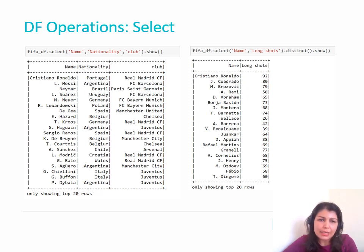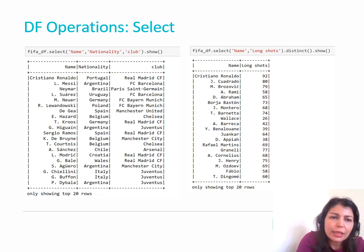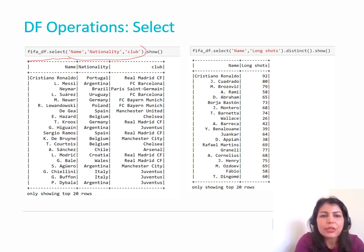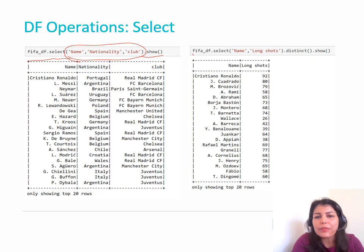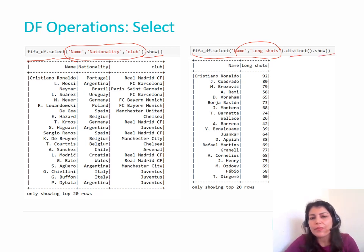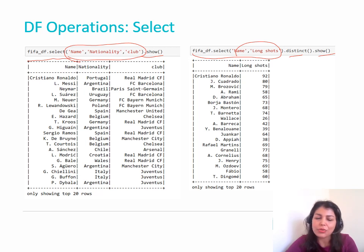Another DataFrame operation is select(), very similar to SELECT in SQL. For example: FIFADF.select('name', 'nationality', 'club').show() displays those specific columns. You can also write FIFADF.select('name', 'long_shots').distinct().show() — the distinct operation, like DISTINCT in SQL, removes duplicate values and lists only unique values.